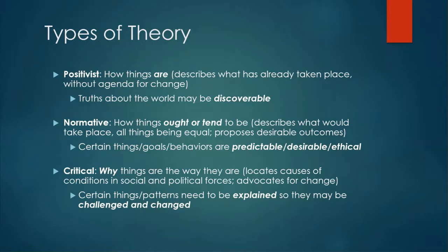A third type of theory are critical theories, and these help researchers get at why things are the way they are, and locate causes of conditions in society within social and political forces, advocating for change. The philosophy behind these theories is that certain things or patterns need to be explained so that they may be challenged and changed.